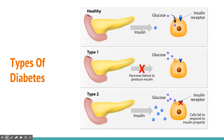Only then can glucose enter the cell and provide energy. In type 1 diabetes there is no insulin to help glucose enter the cells, so the glucose remains in the bloodstream. This doesn't provide energy to the cells, which is problematic because the brain, heart, and kidneys all require glucose to function. The only way to treat type 1 diabetes — which primarily affects children — is to give insulin injections.